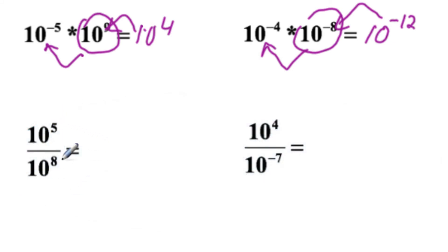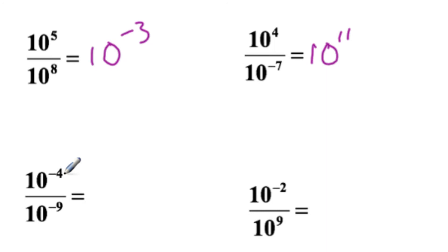So when we divide powers of ten, we subtract the exponents. Five minus eight is going to be minus three. Four minus a minus seventh is going to be ten to the eleventh. Minus four minus a minus nine is going to be ten to the fifth. Minus two minus nine is going to be ten to the eleventh.